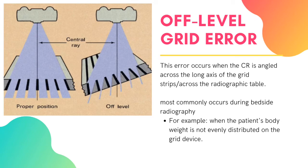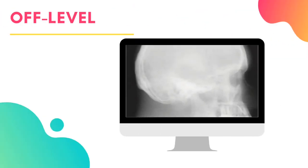The first grid error is called the off-level grid error. This error occurs when the central ray is angled across the long axis of the grid strips across the radiographic table, and most commonly occurs during bedside radiography — for example, when the patient's body weight is not evenly distributed on the grid device. Off-level is the most common type of cutoff and can occur from either the tube or grid being angled. It can often be seen with mobile radiographic studies or horizontal beam exams, and appears as a loss of density across the entire image. This is the only type of grid cutoff that occurs with both focused and parallel grids.